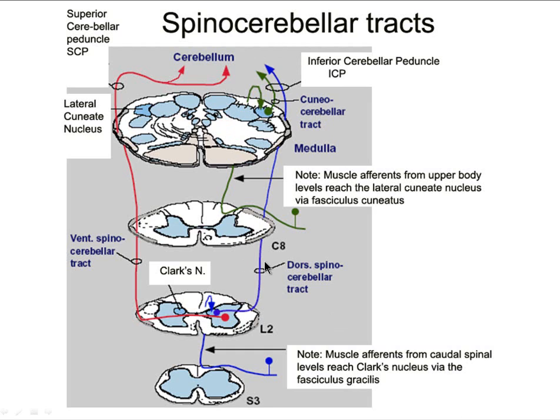If you cut the dorsal spinal cerebellar tract, you're going to get ipsilateral signs. Typically cerebellar signs are ipsilateral, so you may get some ipsilateral ataxia.